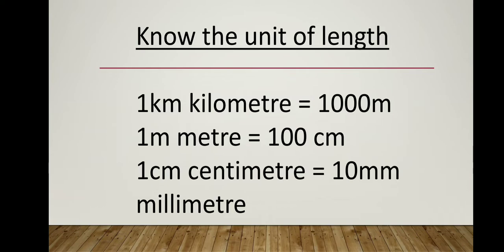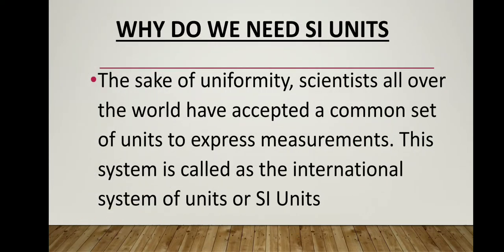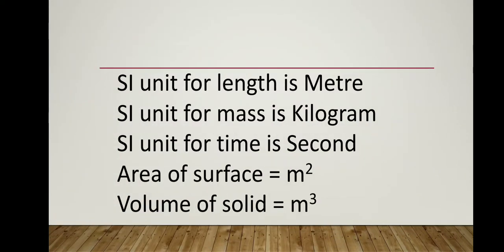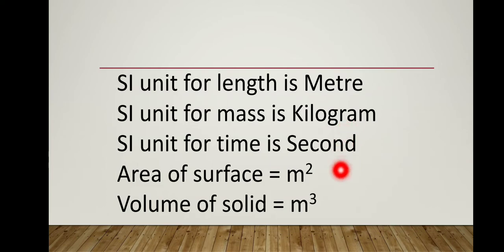The unit conversions for length: one kilometer equals one thousand meters; one meter equals one hundred centimeters; one centimeter equals ten millimeters. Why do we need SI units? For the sake of uniformity, scientists all over the world have accepted a common set of units — called the International System of Units, or SI units. SI unit of length: meter; SI unit of mass: kilogram; SI unit of time: second; area: meter squared; volume of a solid: meter cubed.